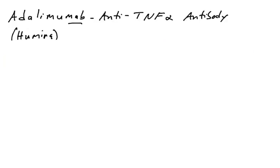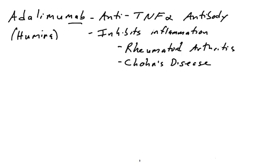There is a drug, brand name Humira, generic name adalimumab — ending in M-A-B, so it is a monoclonal antibody. It is generated against the protein TNF-alpha. A scientist injected TNF-alpha into an animal and isolated monoclonal antibodies that bound TNF-alpha. Why would we want to target TNF-alpha? TNF-alpha plays a big role in inflammation, so we would want to target it to inactivate it and inhibit inflammation. There are certain autoimmune disorders, such as rheumatoid arthritis and Crohn's disease, that are mediated by TNF-alpha.